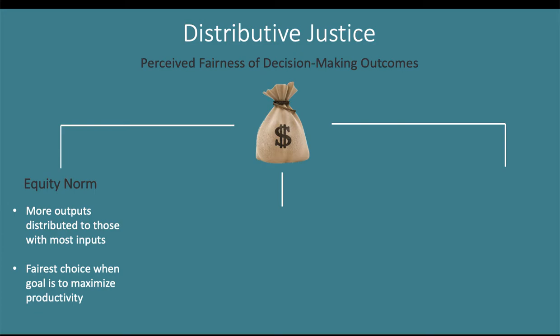The equity norm is perceived as the fairest choice when the organization's goal is to maximize productivity — when we're focused on individual performance and individual contributions. For example, if you are a sales employee and at the end of the quarter, the most fair way to distribute outcomes would be to look at all sales employees: those who sold the most would get the highest bonuses, and those who sold the least would get the lowest bonuses, according to the equity norm.